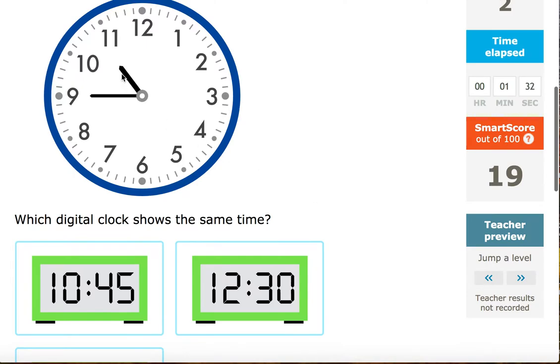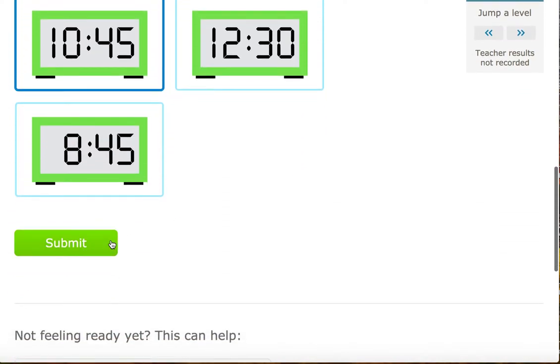Again, identify the hour and then the minute. I notice the shorthand is pointing in the realm of 10. It's not exactly 11. It's in the realm of 10. So the hour is 10 o'clock and the minute falls on, let's see. This is 5, 10, 15, 20, 25, 30, 35, 40, 45. 10:45 and click submit.